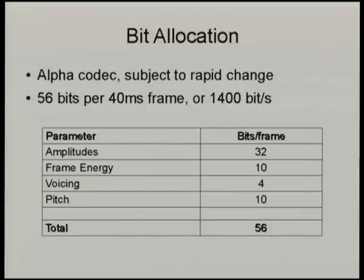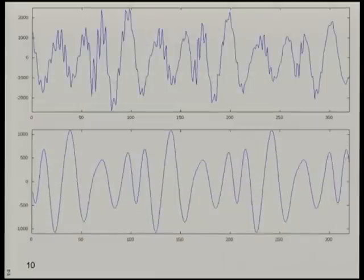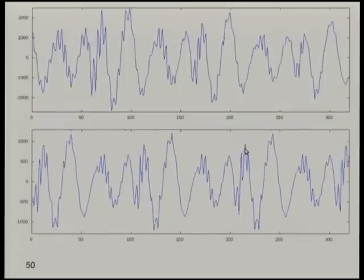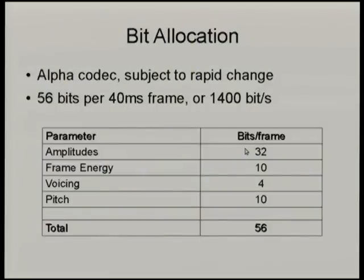This is the bit allocation of the current Codec 2 alpha version. Every 40 milliseconds we send 56 bits. Most of them are used for the amplitudes — the height of each sine wave going up and down over the spectrum. Then we send some information about frame energy, the overall volume level; some information on voicing, whether the signal is a vowel or a consonant; and then information on the pitch — is it currently 80 Hz, 230 Hz, 500 Hz, etc.